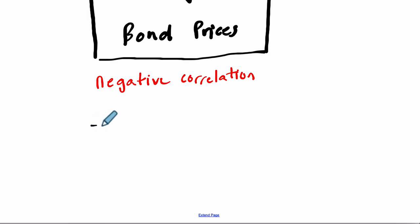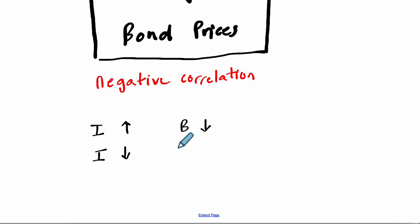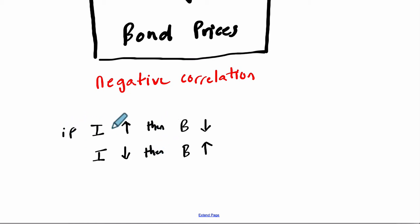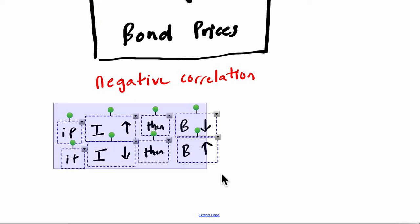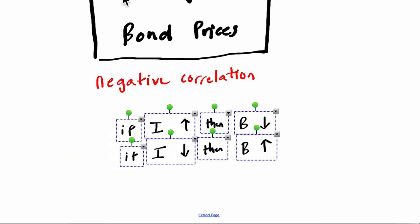In the first scenario, if interest rates increase, then bond prices decrease. However, if interest rates decrease, then bond prices increase. If the interest goes up, the bond prices go down; if the interest goes down, then the bond prices go up.